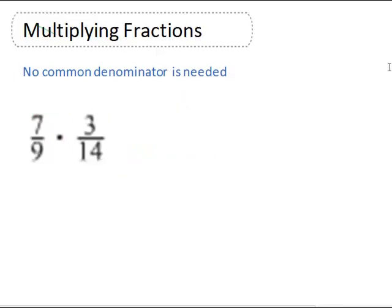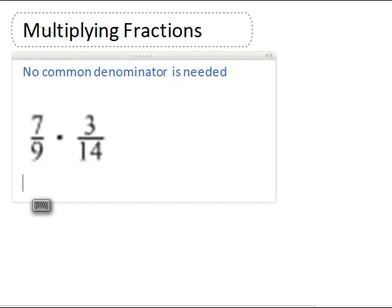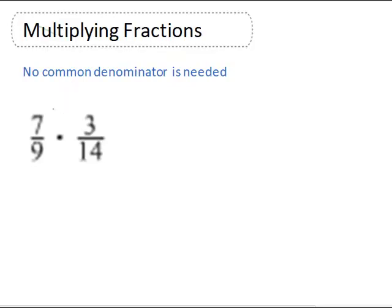Now we have 7/9 times 3/14. We're going to check if there are any common factors between numerators and denominators. This 7 and the 14 have a factor of 7 in common, so 7 equals 7 times 1 and 14 equals 7 times 2.